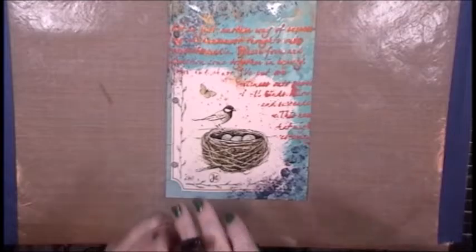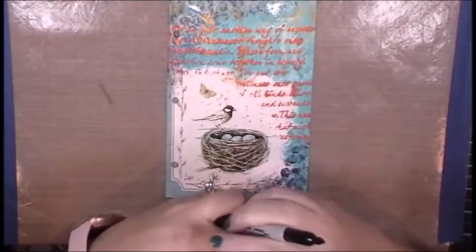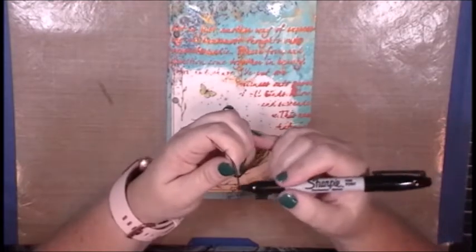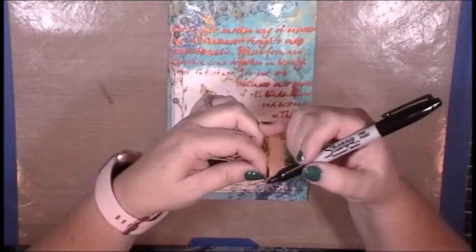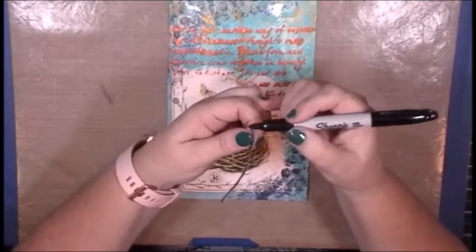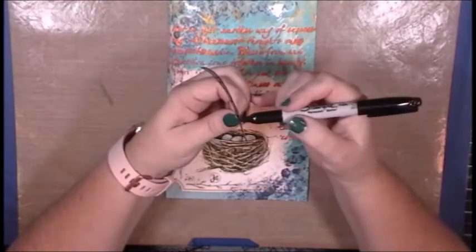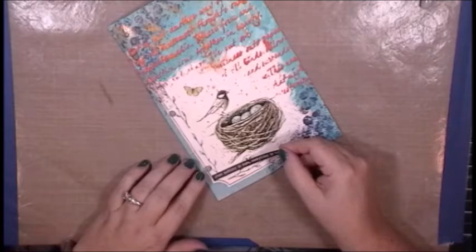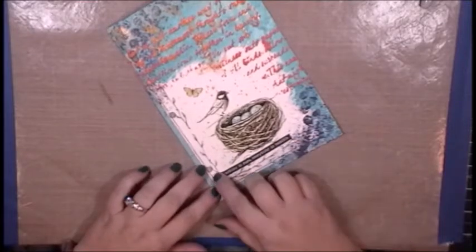My next step is to add a sentiment or a quote, and I have one of these Tim Holtz Chit Chat sentiment strips. I'm going to go around it with my Sharpie marker. It is printed on white core paper. I don't really want those white edges to show, so I am just going to kind of go around all the edges and then adhere this to my page. The quote says 'When nothing is sure, everything is possible.' I don't know that that necessarily has anything to do with birds and eggs, but that's the great thing about mixed media. It doesn't have to match and it's my art journal. I can do whatever I want. How does that song go? It's my party, I can cry if I want to. It's my art journal and I can quote whatever I want to.